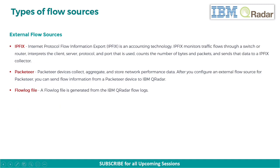Next, we have IPFIX — Internet Protocol Flow Information Export — an accounting technology. IPFIX monitors traffic flows through a switch or router, interprets the client, server, protocol, and port that is used, counts the number of bytes and packets, and sends that data to an IPFIX collector. Next, we have Packeteer. Packeteer devices collect, aggregate, and store network performance data. After you configure an external flow source for Packeteer, you can send flow information from a Packeteer device to IBM QRadar.